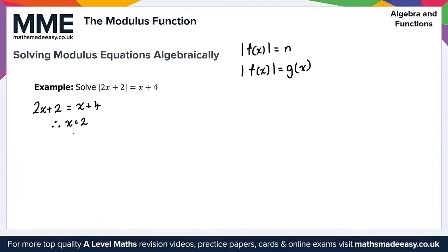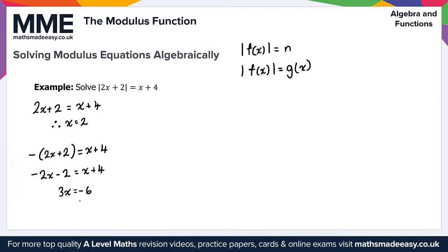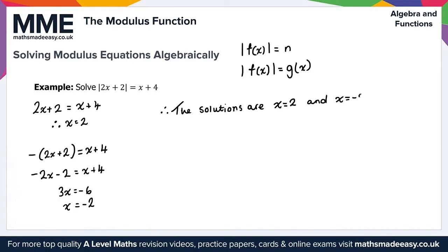The second case is for negative values: minus(2x + 2) = x + 4, so minus 2x minus 2 equals x plus 4. Solving for x gives 3x = minus 6, therefore x = minus 2. Combining both solutions, x = 2 and x = minus 2.